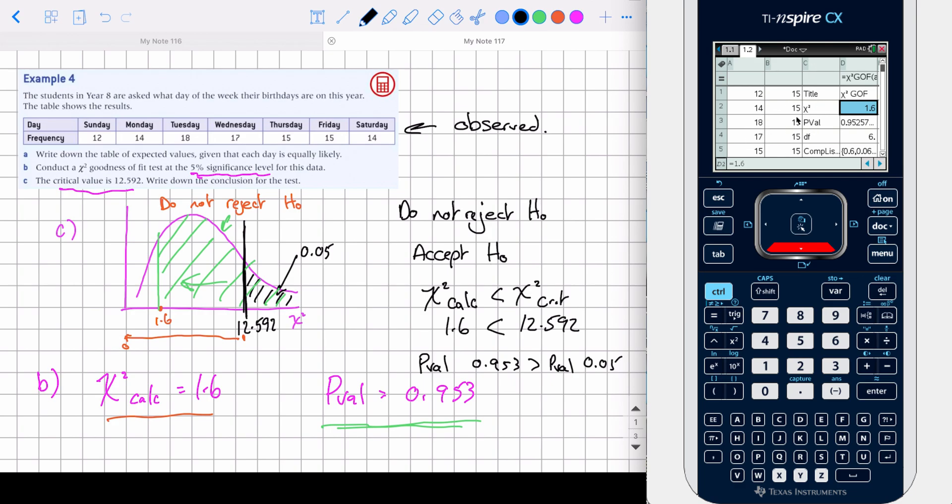So the difference is that this is goodness of fit, and we're using our GDC and lists and spreadsheets, but it's comparing against the same distribution.